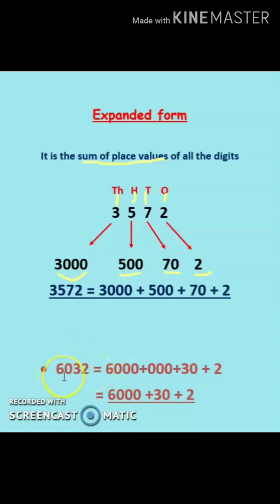The place value of six is six thousand, then zero hundreds, then thirty, then two. But whenever there is a zero in between, zero doesn't have any value, so we ignore writing zero. So the answer will be six thousand plus thirty plus two.